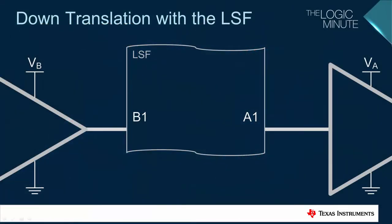This is a simplified schematic for downtranslating with an LSF device. A device powered from the B supply is transmitting into the B side of the LSF, and a device powered from the A supply is receiving the signal after translation. To understand how this works, we have to look inside these devices.